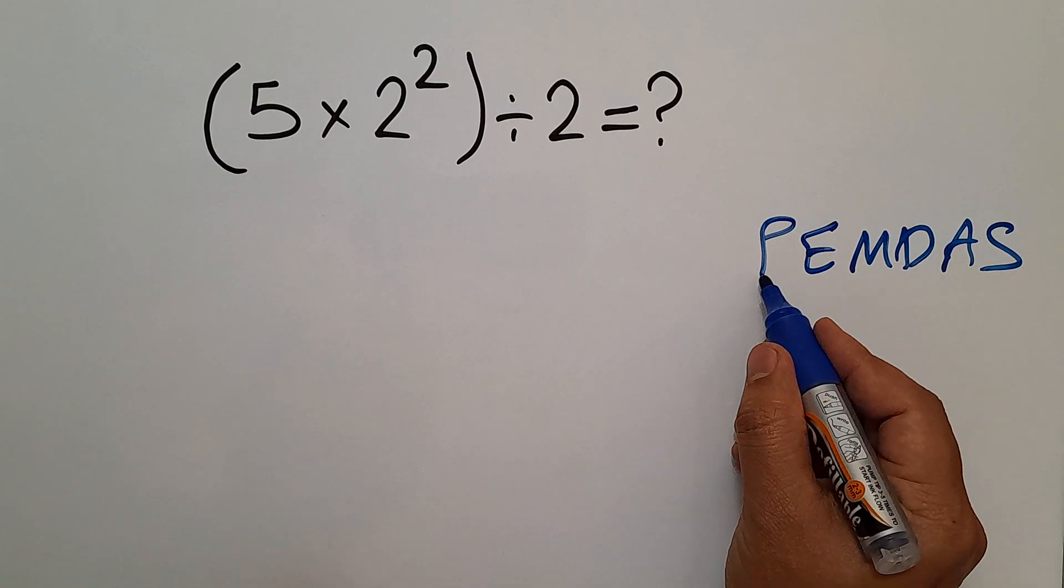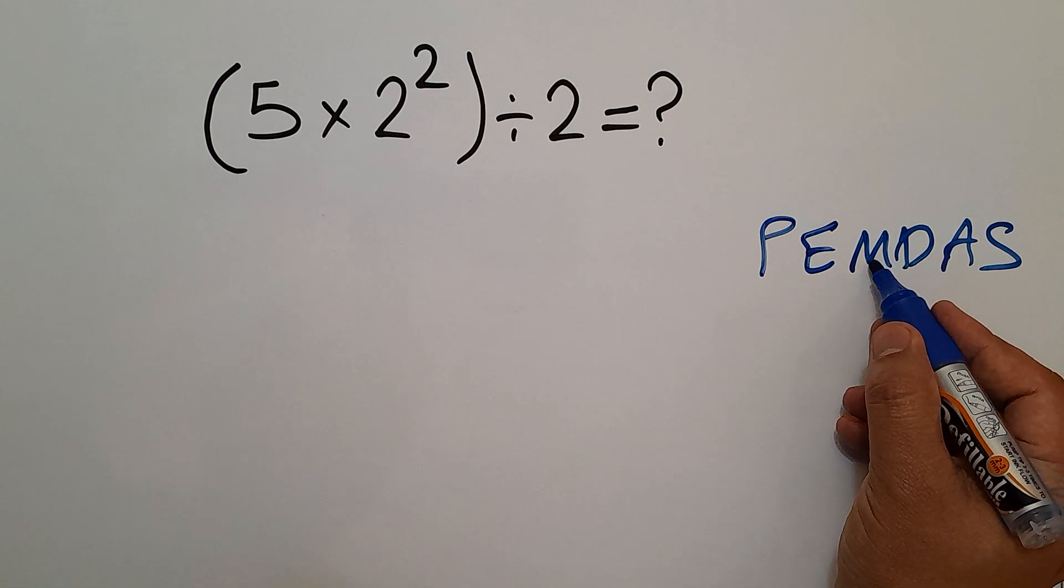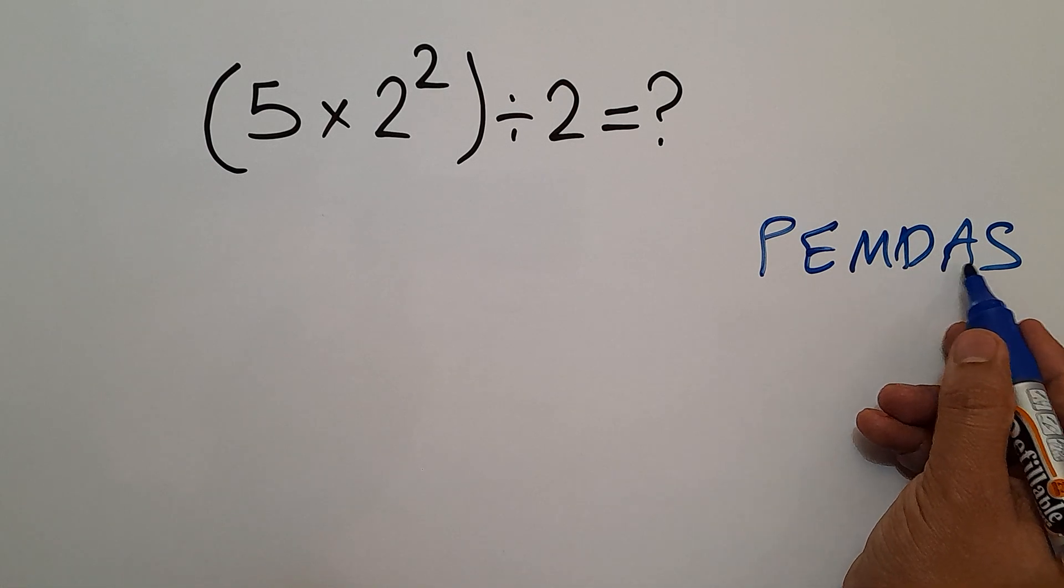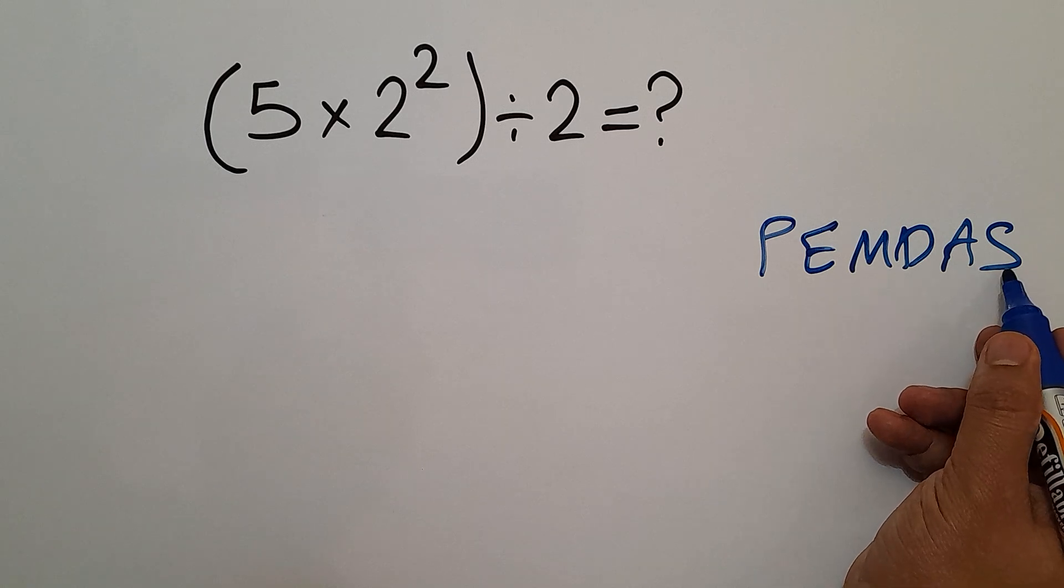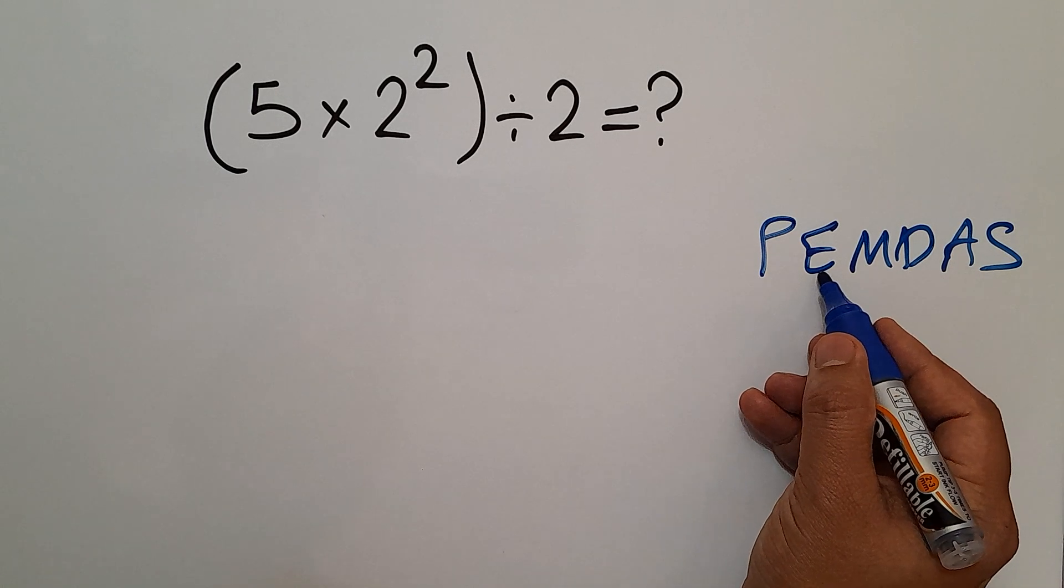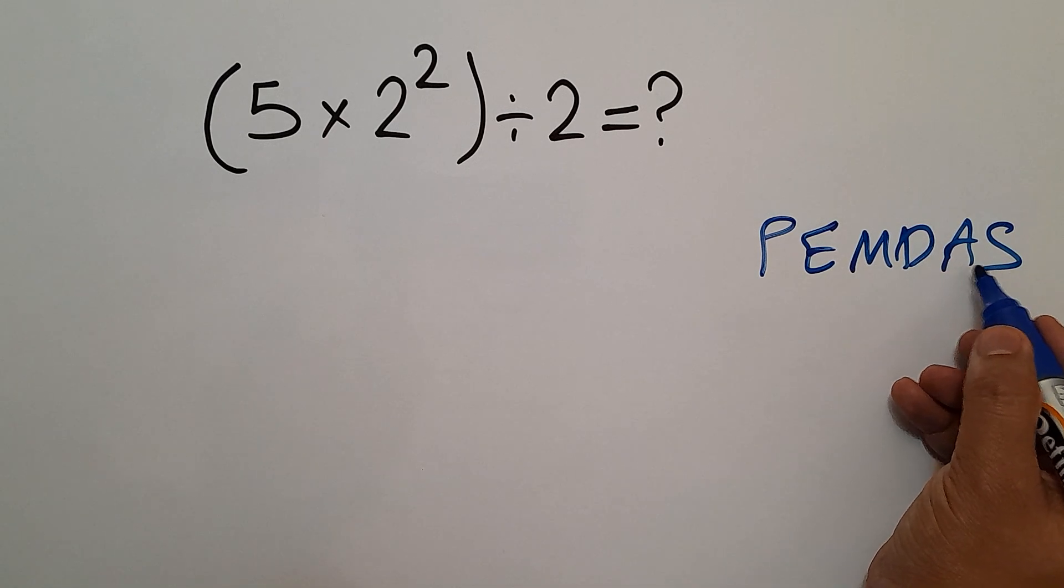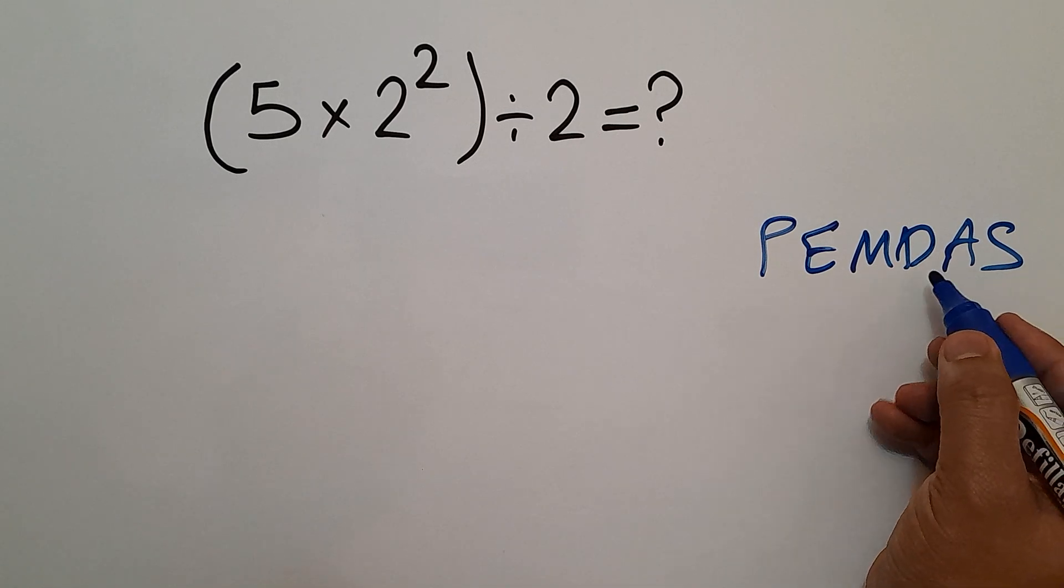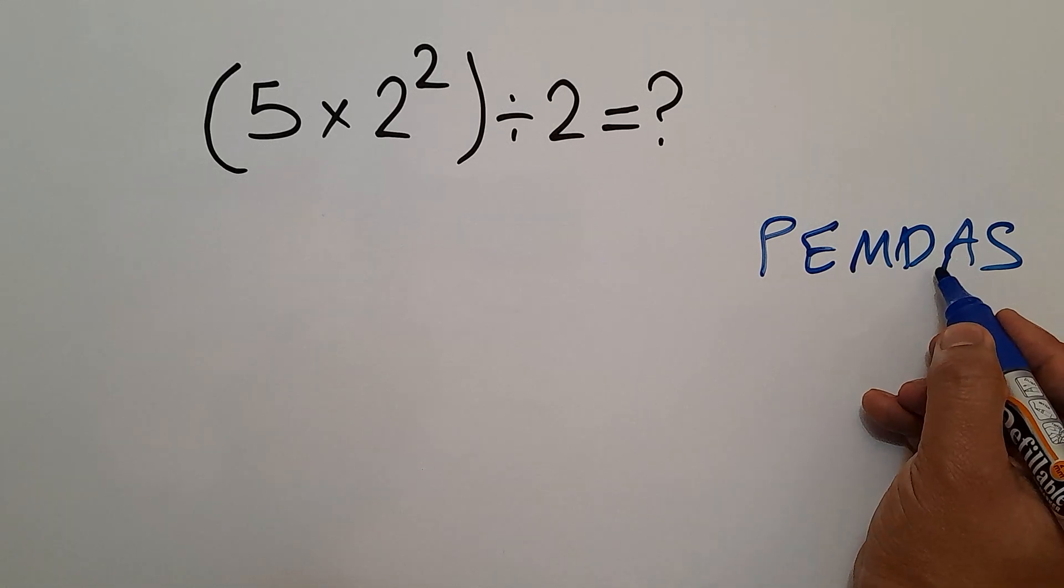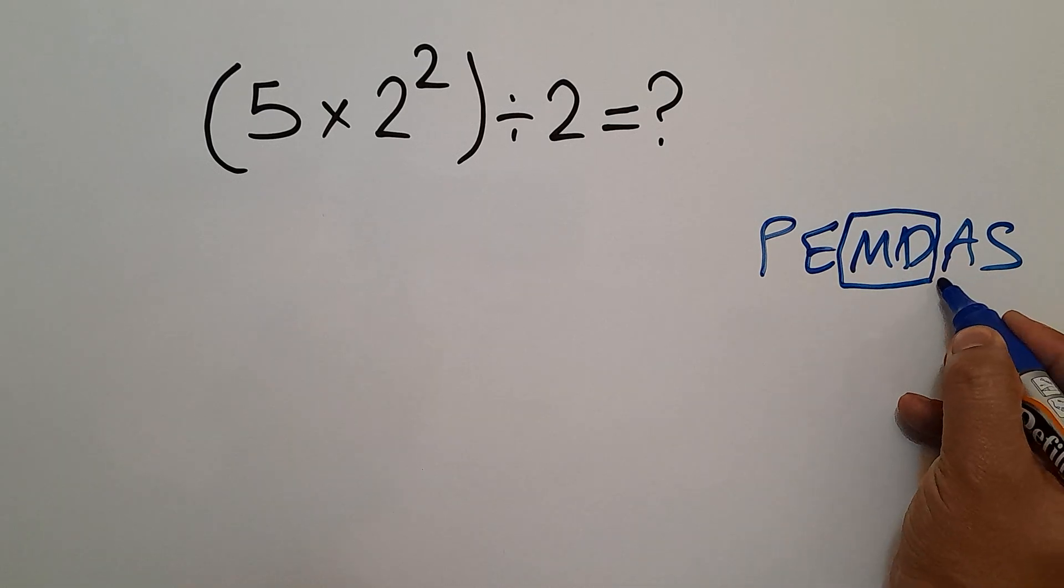P stands for parentheses, E stands for exponents, M and D stands for multiplication and division, A and S stands for addition and subtraction. We do first parentheses, then exponents, then multiplication and division, and finally addition and subtraction. Remember that multiplication and division have equal priority and we work from left to right, and the same applies to addition and subtraction.